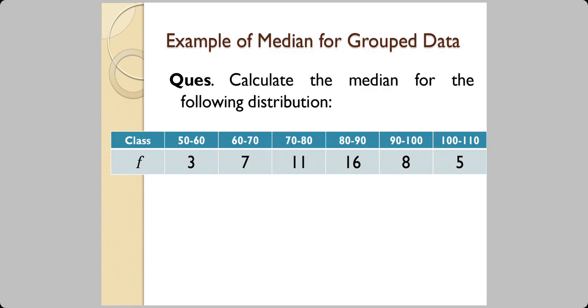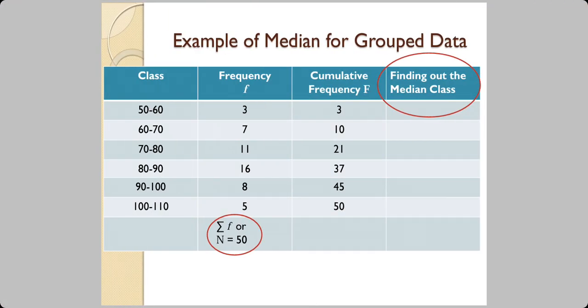Let's look at an example — you're asked to calculate the median for a distribution. First, make appropriate classes and write down the frequencies. The sum of frequencies is 3 + 7 + 11 + 16 + 8 + 5 = 50, which is your n. Then calculate the cumulative frequency: 3, 10, 21, and so on up to the last value.